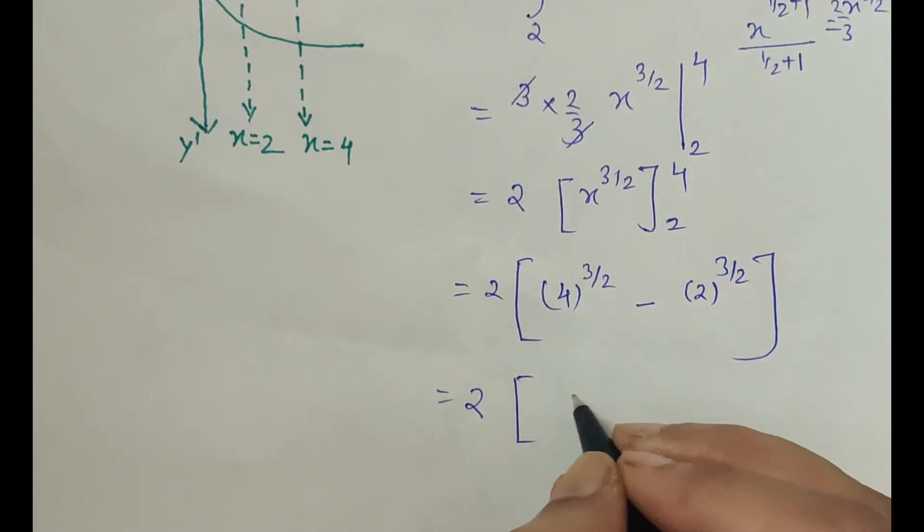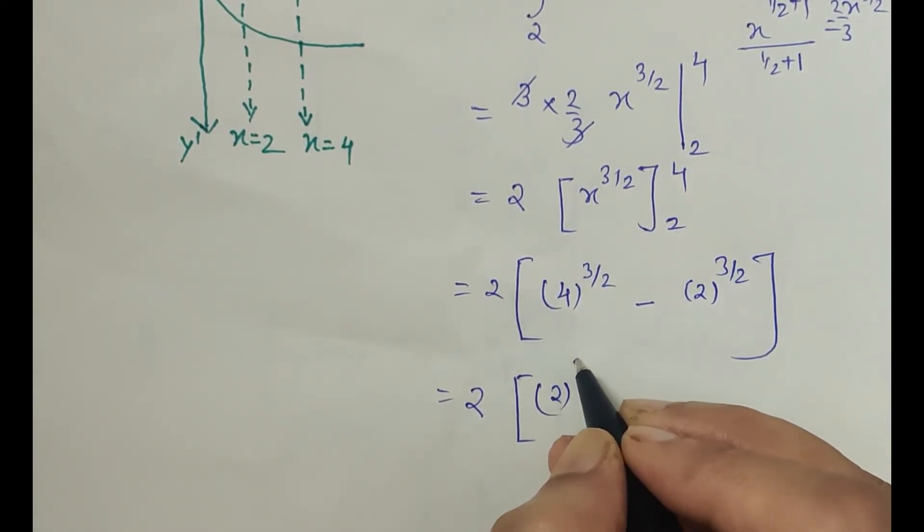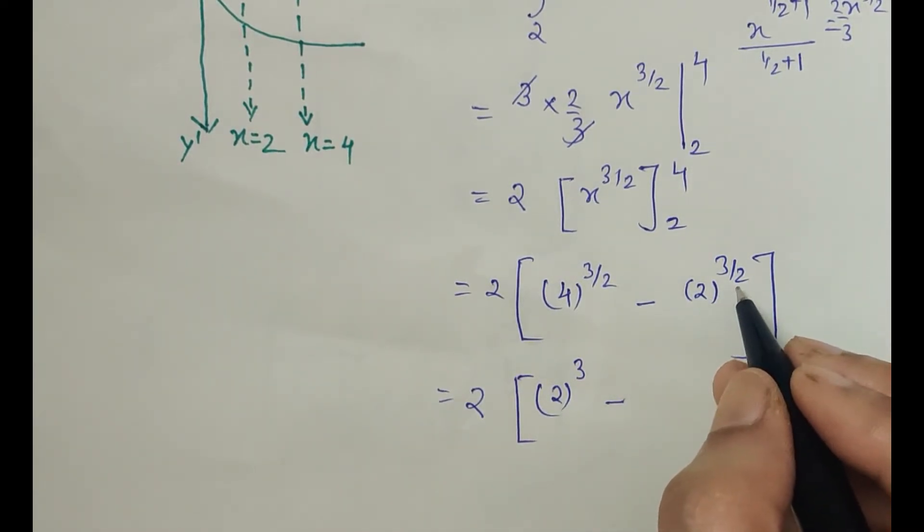So this gives square root. We have square root, so square root of 4 is 2. So 2³ minus √2.